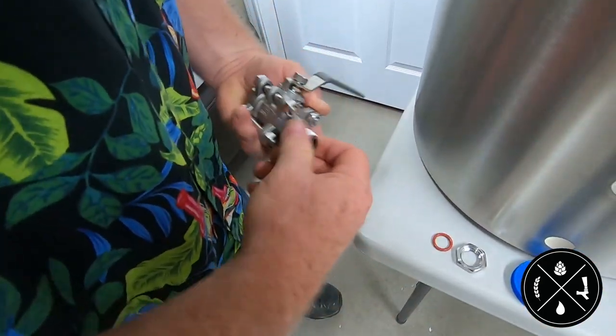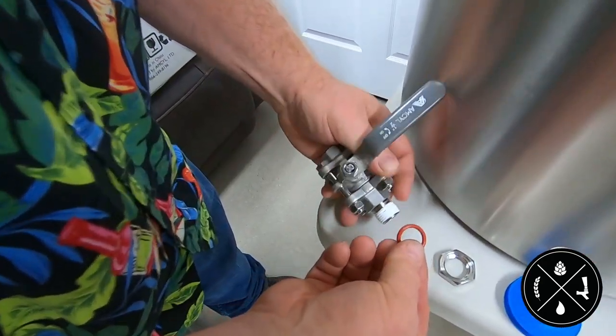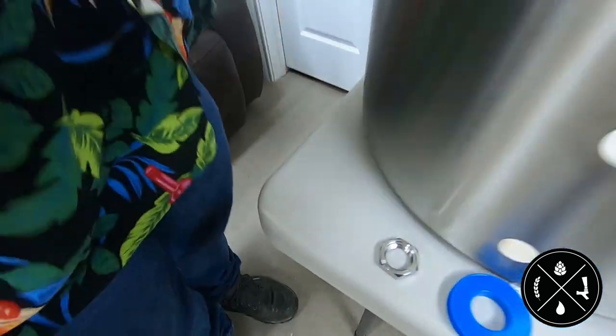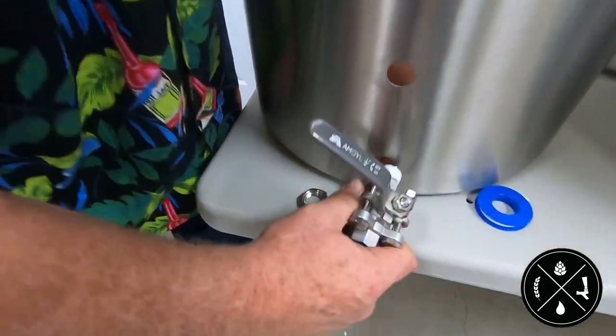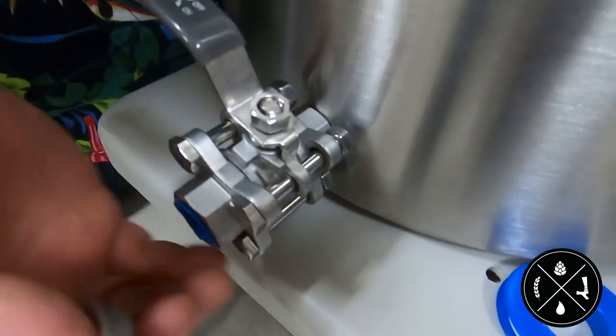Attach the ball valve to the threaded nipple by threading it on hand tight. When attached, pass the threaded nipple through the bottom port of the kettle until the ball valve is in contact with the other wall.